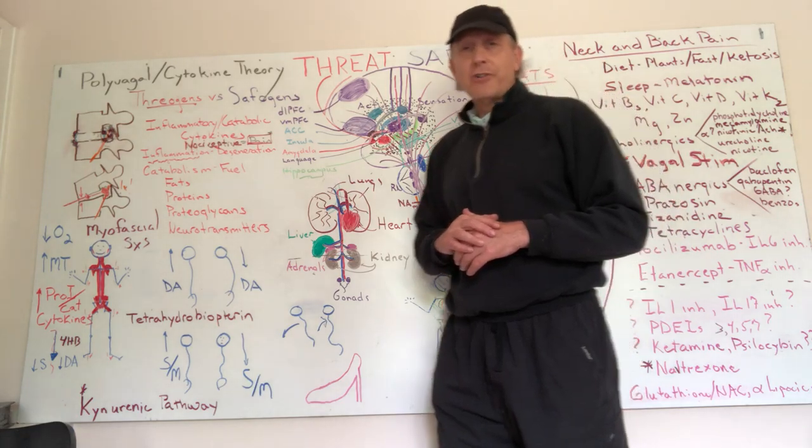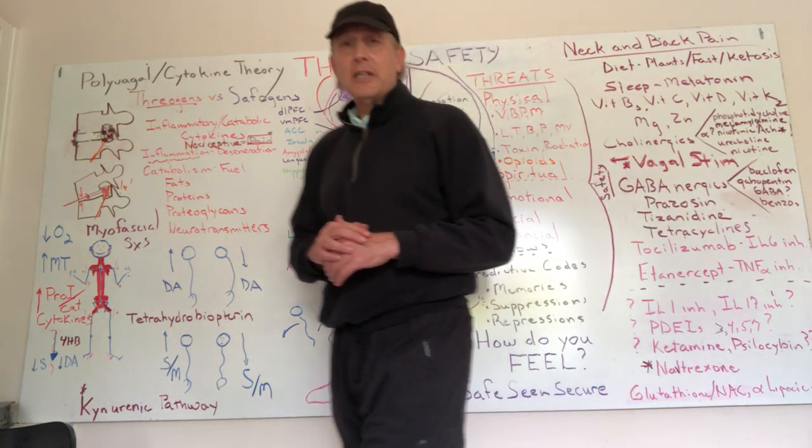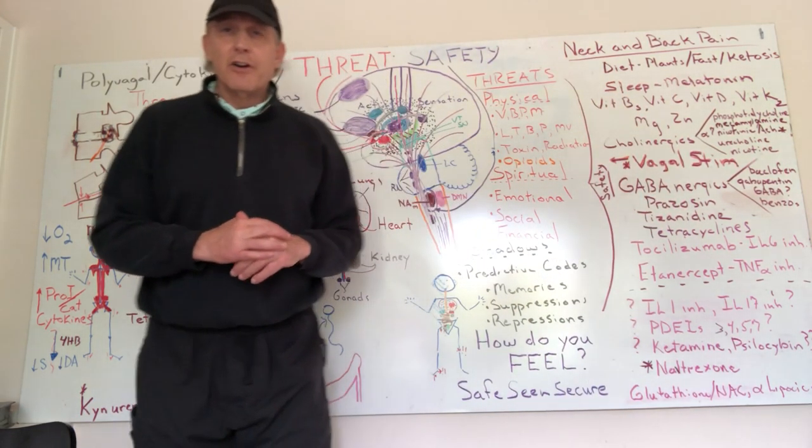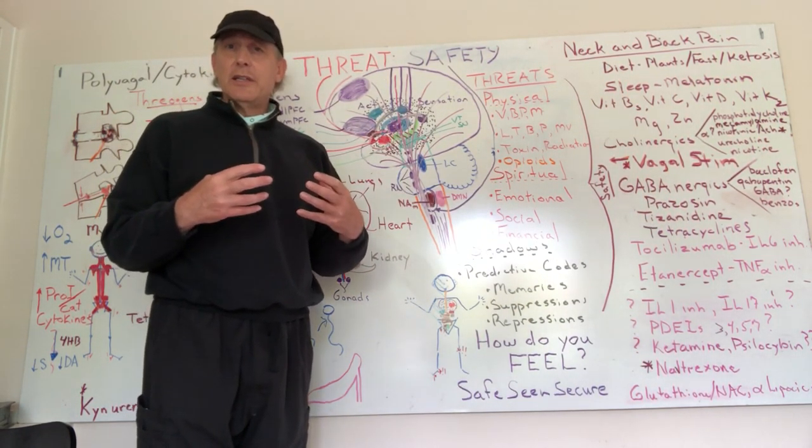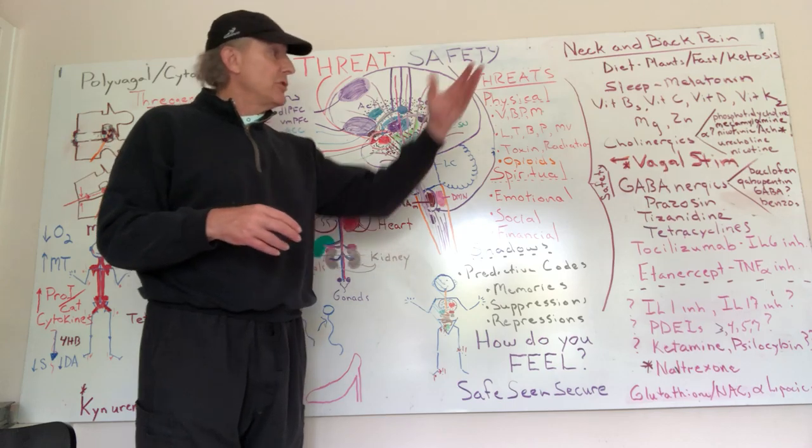These threats are important to screen for in a comprehensive program to treat neck and back pain, particularly myofascial pain. We also know that people with more of these threats are more predisposed to autoimmune diseases — which are extensions of the pro-inflammatory, pro-nociceptive, catabolic cytokine pathway to a more significant extreme. Children who have suffered neglect or abuse are more likely to have autoimmune diseases; women who have suffered incest are 30-plus percent more likely to develop lupus. Specific inflammatory spine conditions like ankylosing spondylitis, psoriatic arthritis, and psoriatic spondylitis are also mediated through this cytokine system.